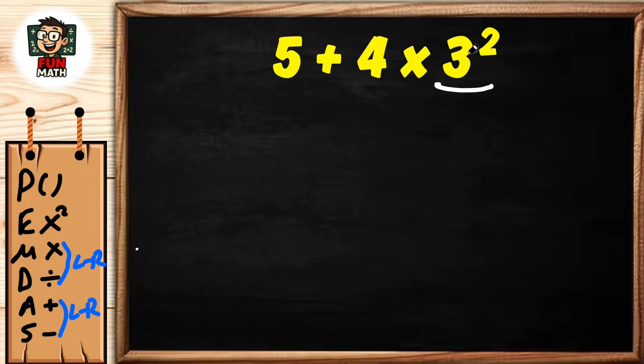First, exponents: 3 to the power of 2 equals 3 times 3, which equals 9. Now multiply: 4 times 9 equals 36.